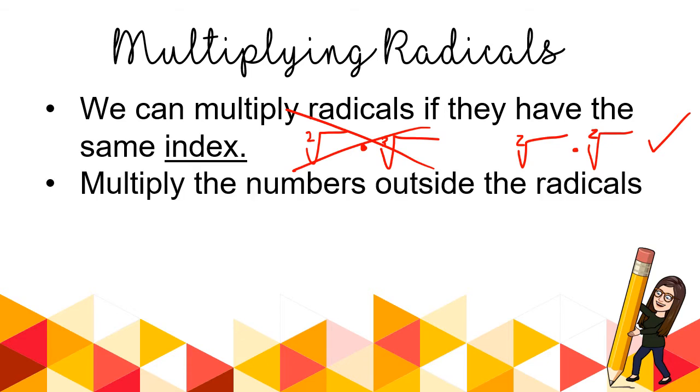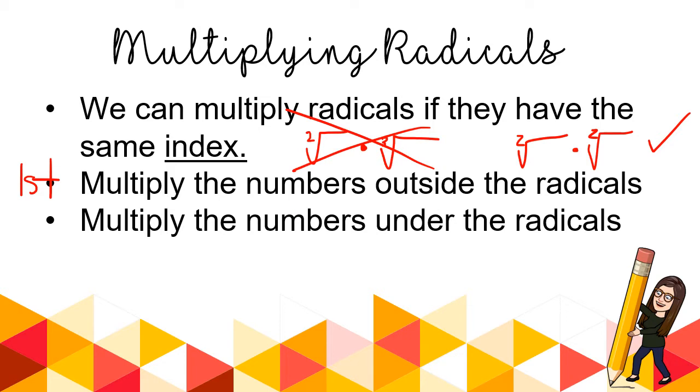The first step, if you want to jot down these steps, we're going to multiply the numbers outside of the radicals. So the clean numbers out front get multiplied. Second, you're going to multiply the numbers under the radicals.